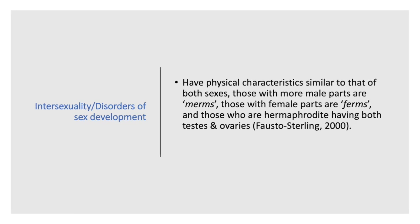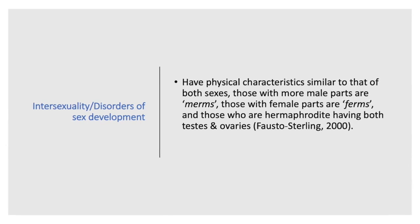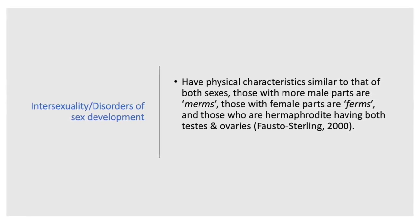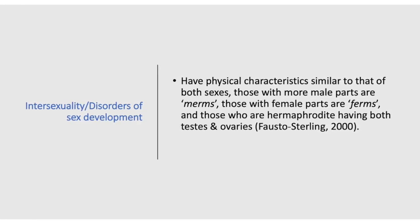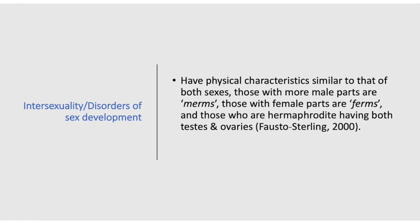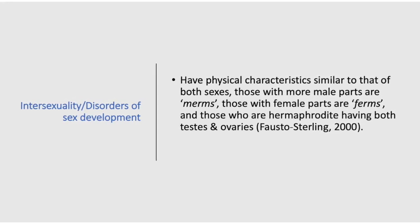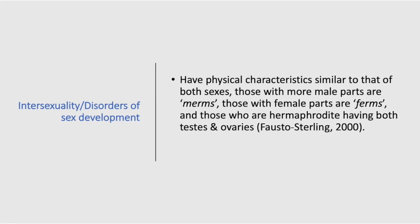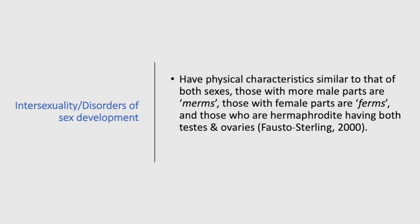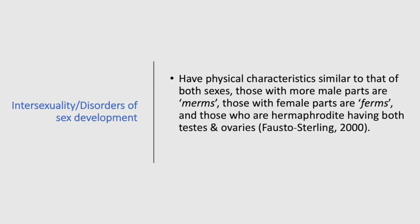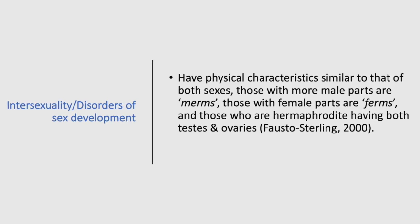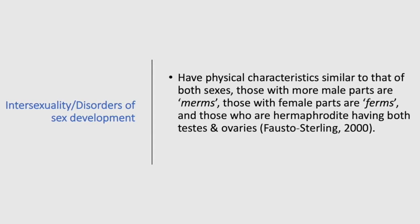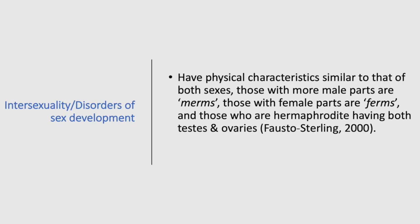Intersexuality and disorders of sex development are when individuals have physical characteristics similar to both sexes. For example, individuals with male parts are called merms, those with female parts are called ferms, and hermaphrodites have both testes and ovaries, according to Fausto-Sterling 2000. This intersex condition is rare and can result from genetic dysfunction or abnormality in prenatal development in the womb.